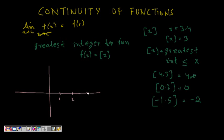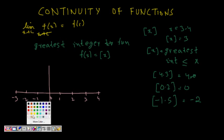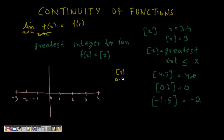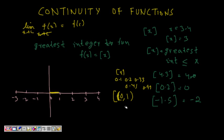Let's say on the x-axis we have 1, 2, 3, 4, -1, -2, -3, and so on, with 0 at the origin. In the interval 0 to 1, for points like 0.1, 0.2, 0.33, 0.45, 0.99, etc., for all numbers in [0, 1), ⌊x⌋ is 0.